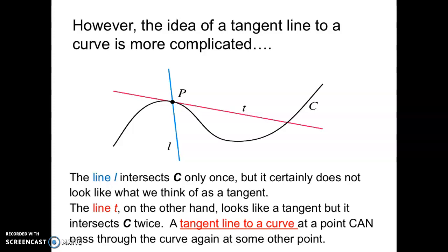However, the idea of a tangent line to a curve is a little bit more complicated. Let's look at the figure in front of us. The line L, the blue line, intersects the graph of the function C only once, but it is certainly not what we think of as a tangent line. Line T, on the other hand, looks like a tangent line to the curve because it just kisses the curve at point P, but it intersects the curve at another point.